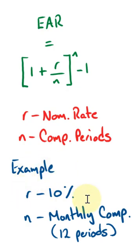So let's do a quick example. We have a nominal rate of 10% and compounding periods are going to be monthly, so 12 periods.